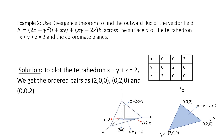Let's see another example. Example 2: Use the Divergence theorem to find the outward flux of the vector field F = (2x + y²)i + (xy)j + (xy − 2z)k across the surface sigma of the tetrahedron x + y + z = 2 and the coordinate planes. Before the solution, we plot the tetrahedron by making a table for x, y, and z. Substituting gives the ordered pairs (2,0,0), (0,2,0), and (0,0,2). We mark these in a three-dimensional plane.